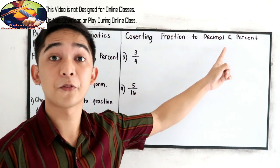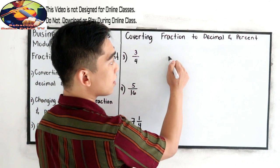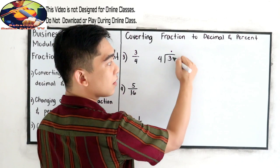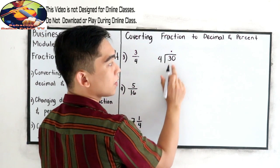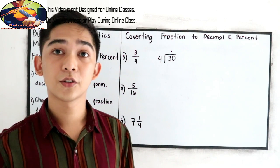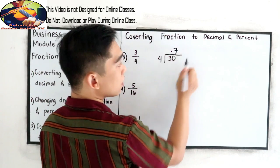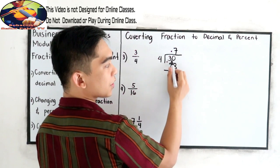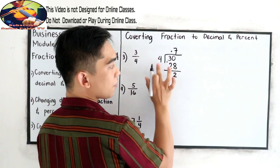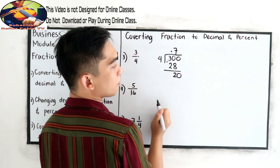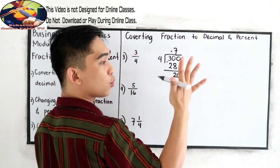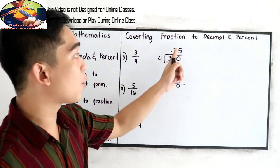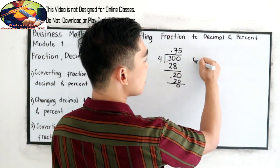For 3 over 4, we convert to decimal first. 3 divided by 4 — we cannot divide 3 by 4 directly, so we write the decimal point and 0 on the right side of 3. 30 divided by 4 is 7; 7 times 4 is 28. Subtract: 30 minus 28 is 2. We cannot divide 2 by 4, so we write 0 and bring down 0. 20 divided by 4 is 5; 5 times 4 is 20. Subtract: remainder is 0. So our decimal form is 0.75.